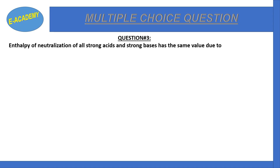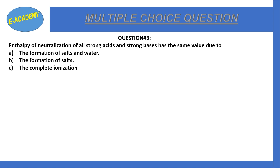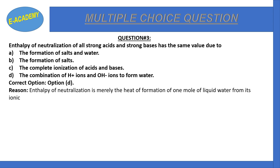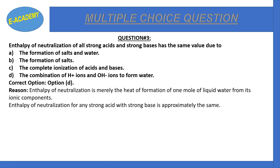Question number three: Enthalpy of neutralization of all strong acids and strong bases has the same value due to — the formation of salts and water, the complete ionization of acids and bases, or the combination of H⁺ ions and OH⁻ ions to form water. The correct option is C: combination of H⁺ and OH⁻ ions to form water. Enthalpy of neutralization is the heat of formation of one mole of liquid water from its ionic components, and is approximately the same for any strong acid with a strong base.